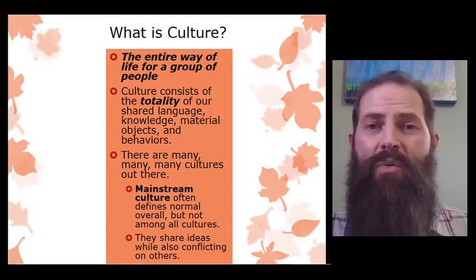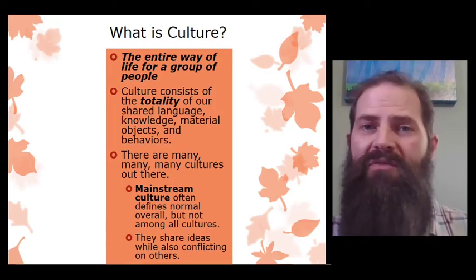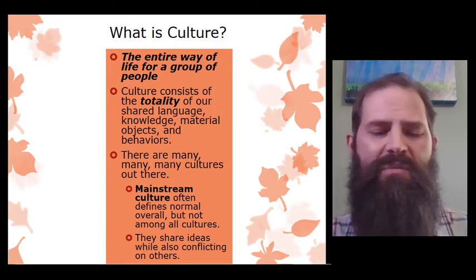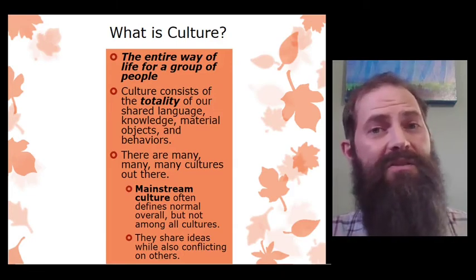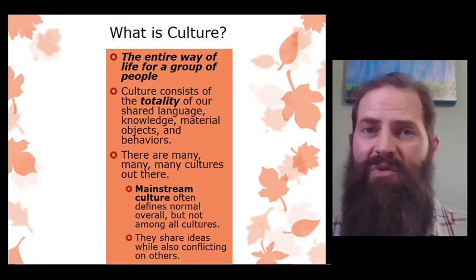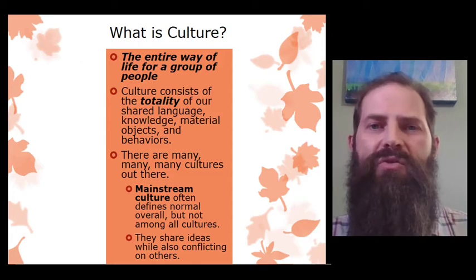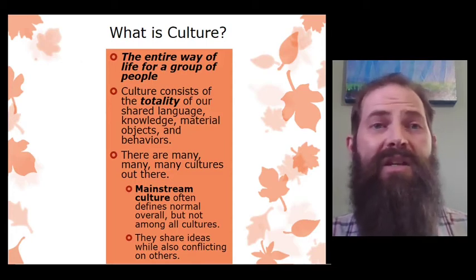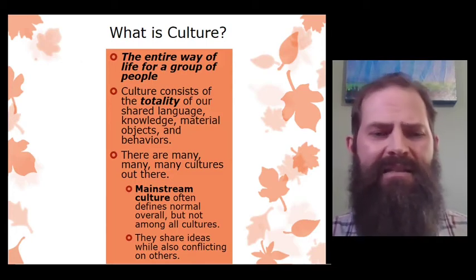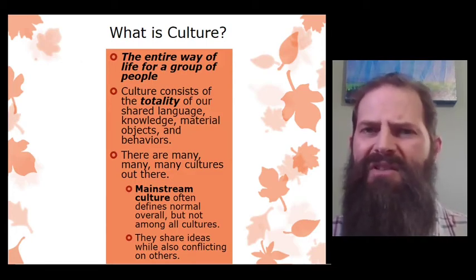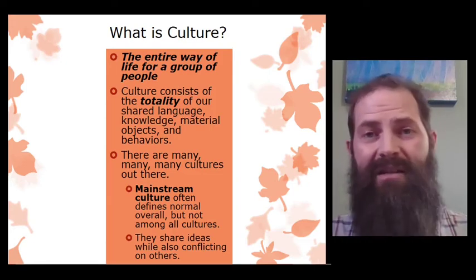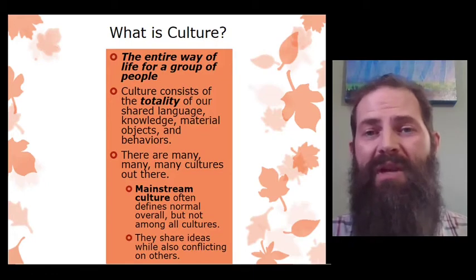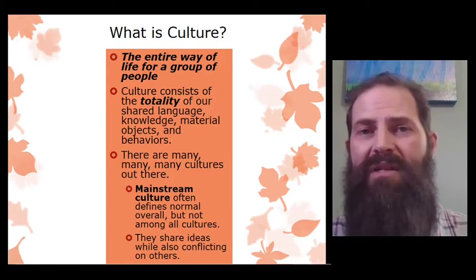Culture tells us things like what a normal behavior would be, what a normal idea would be, what an acceptable thing would be, and also the opposite — what isn't acceptable. Our culture even includes ways that we tell people when they have crossed lines, to help pull them back into what's considered normal for our culture. Culture is a very big idea, and for that reason, we'll spend a lot of time breaking it into smaller pieces.